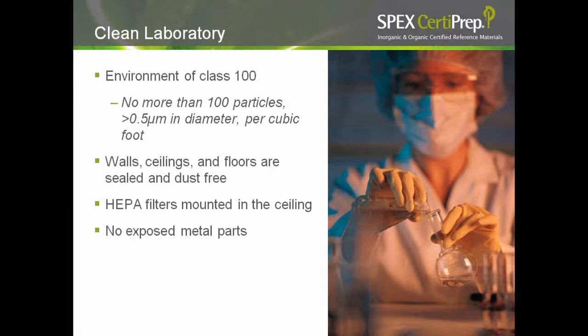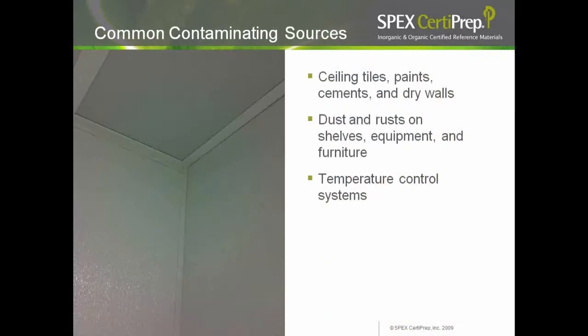If a full-blown clean room is too expensive, you can use a clean hood to prepare your samples. Common contaminating sources in a regular lab include ceiling tiles, paints, cements, and dry walls — dry walls can give high calcium and lead contamination. Rust on shelves, equipment, and furniture can give iron contamination. Carbon and silica can come from your temperature control systems.